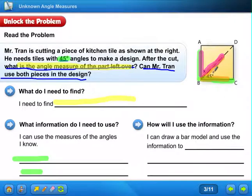So 45 plus 45 has to equal 90, right? So after the cut, what is the angle measure of the part left over? It is 45 degrees. We know that this right here is 45 degrees.